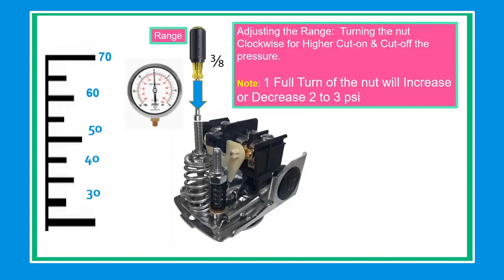By adjusting the center nut, you will lower or raise the range, so you can increase or decrease the pressure by turning clockwise or counterclockwise. Turning the nut clockwise will increase the pressure. Note, one full turn of the nut will increase or decrease the pressure by 2 to 3 psi.